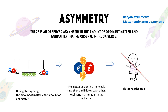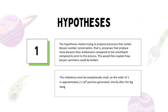Whatever the process was that led to baryonic asymmetry is known as baryogenesis, and there are several competing hypotheses as to what this process is. The hypotheses involve trying to propose processes that violate baryon number conservation — that is, processes that produce more baryons than antibaryons compared to the constituent components prior to the process. This would then explain how baryon symmetry could be broken.